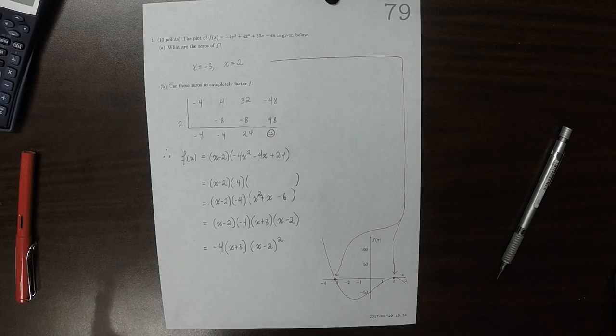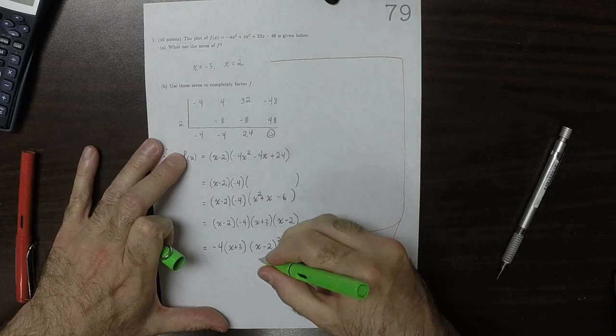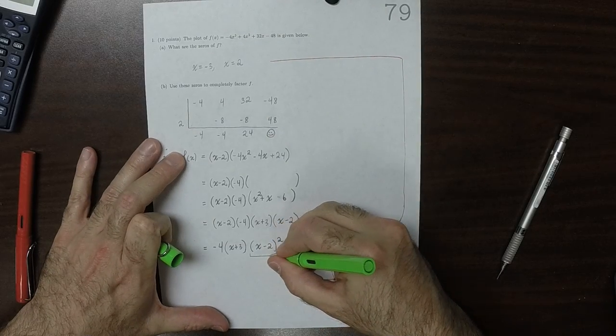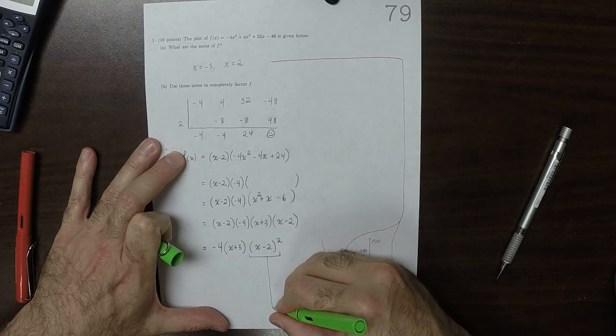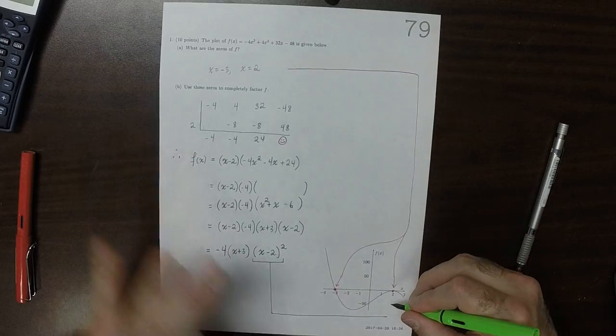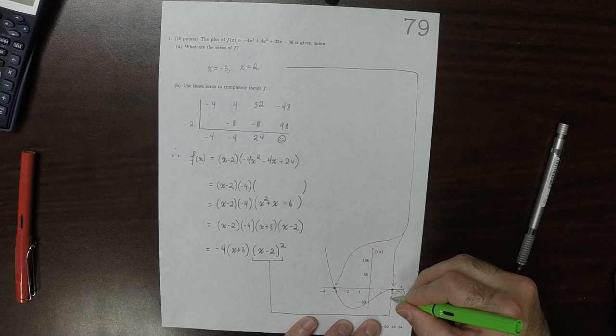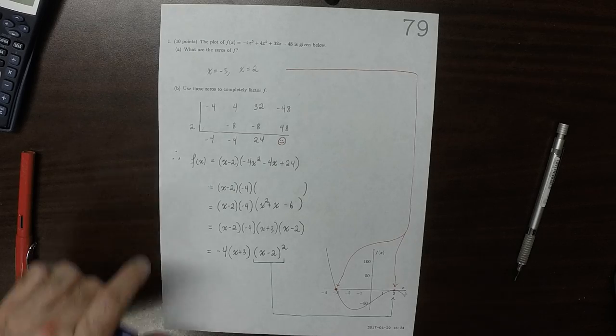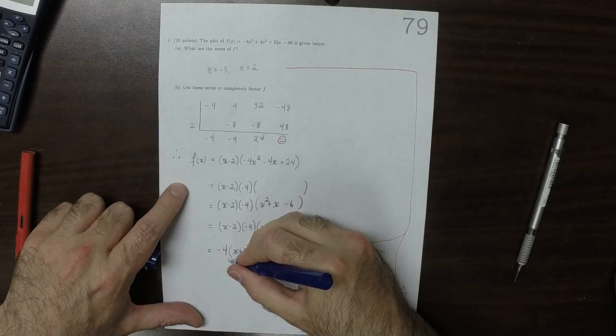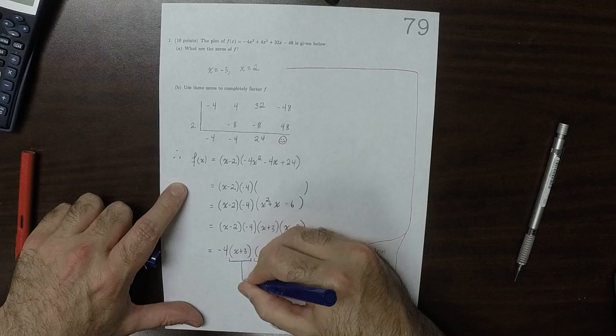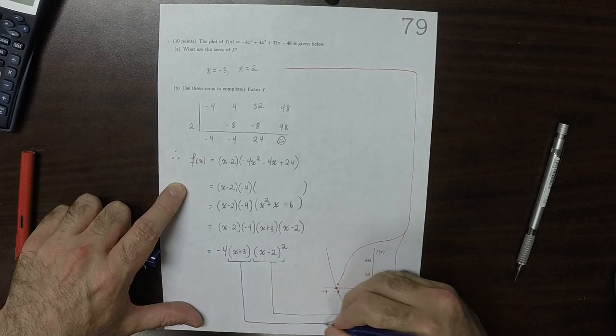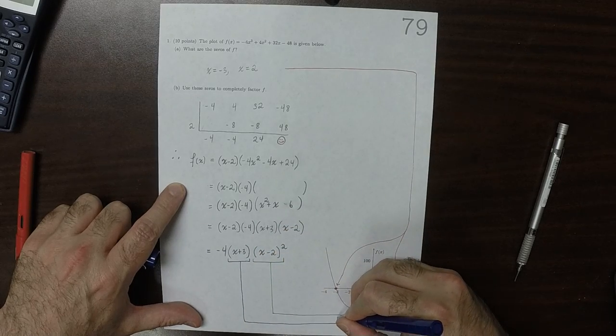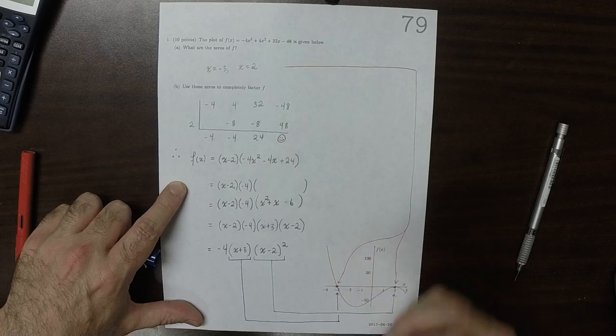You can see that this factor appears twice and corresponds to that zero, and this factor appears once and corresponds to that zero.